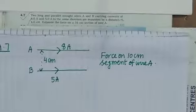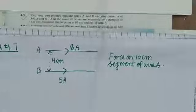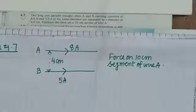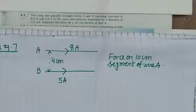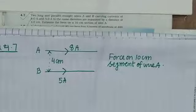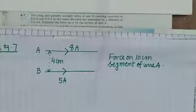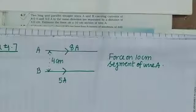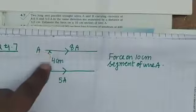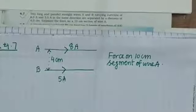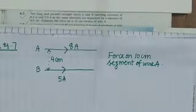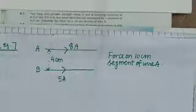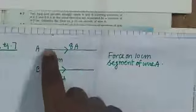Question 4.7: Two long and parallel straight wires A and B carrying currents of 8 ampere and 5 ampere in the same direction, as shown in the diagram, separated by a distance of 4 centimeters. Estimate the force on a 10 centimeter section of wire A.